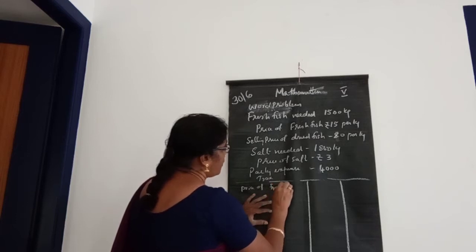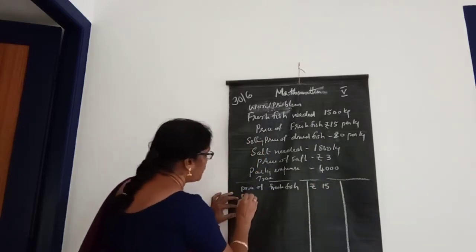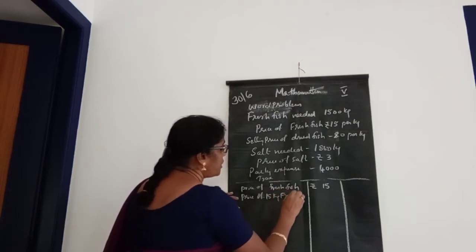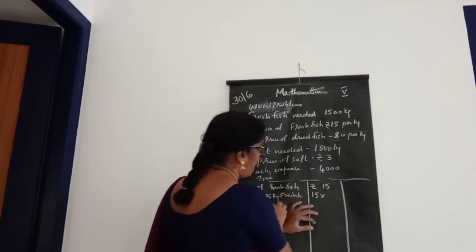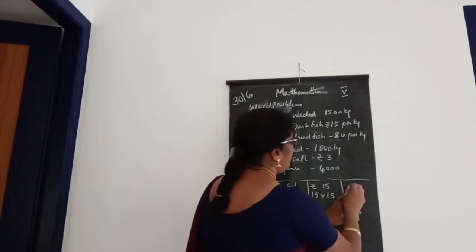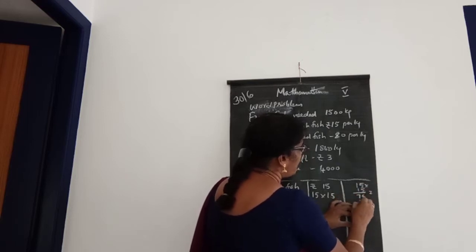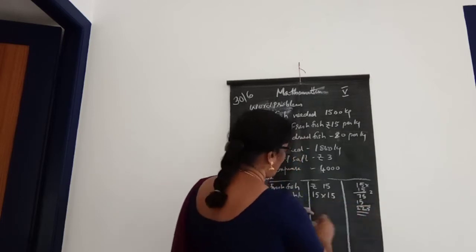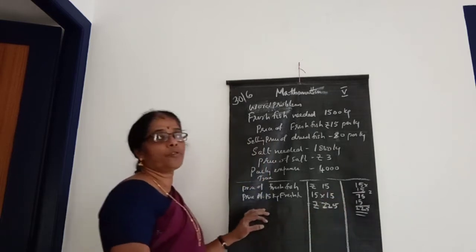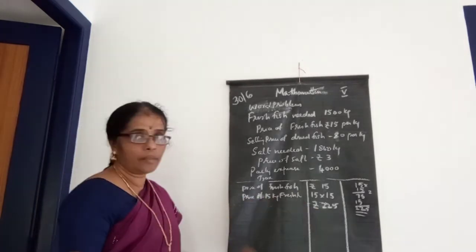Price of fresh fish is rupees 15 per kilogram. So the price of 15 kilograms of fresh fish is equal to 15 into 15. Using the working column: 15 into 15 gives 225. So rupees 225 is needed to buy 15 kilograms of fresh fish.